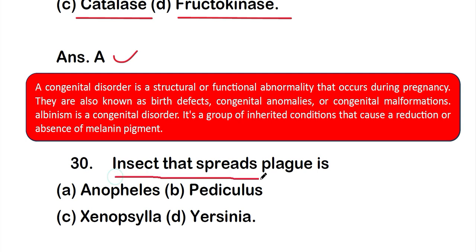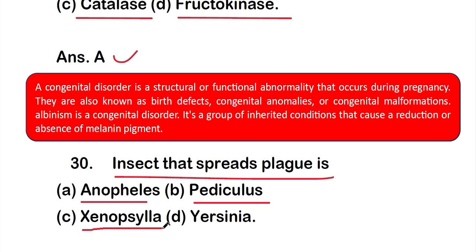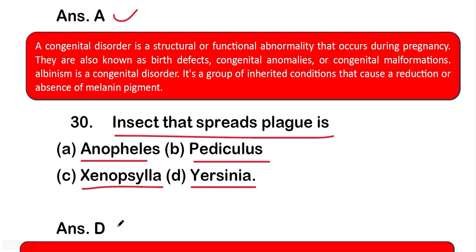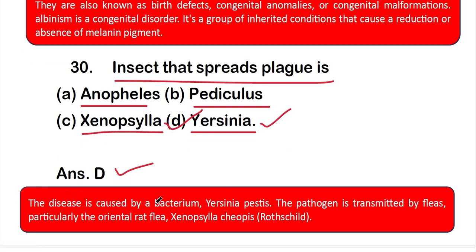Question number 30: The insect that spreads plague is — Option A: Anopheles, Option B: Pediculus, Option C: Xenopsylla, or Option D: Yersinia. The right answer is Option C, Xenopsylla. Plague is caused by the bacterium Yersinia pestis, and the pathogen is transmitted by fleas, particularly the oriental rat flea Xenopsylla cheopis.